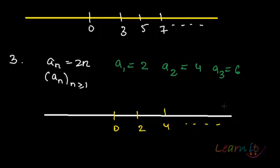Sequences essentially are functions — functions whose domain is the natural numbers. f(n) is a function, and the functional values you get will be some real number. So a_1, a_2, a_3 and so on up to a_n creates a sequence of real numbers.